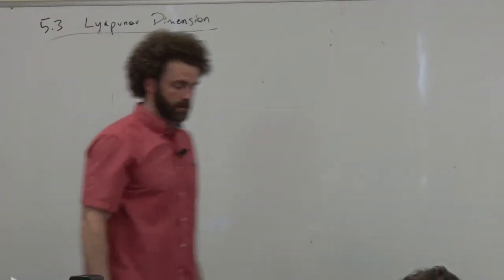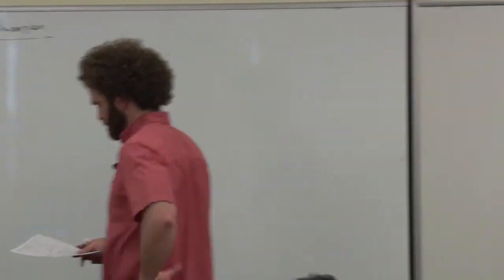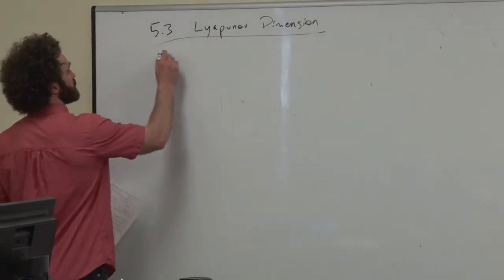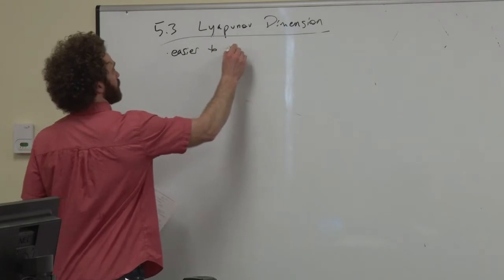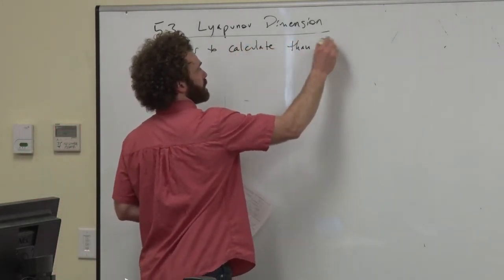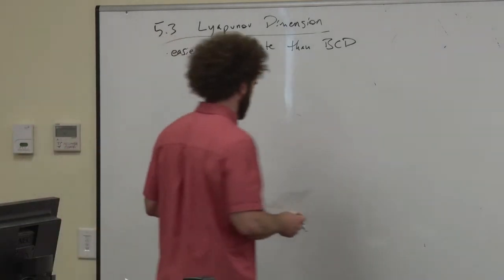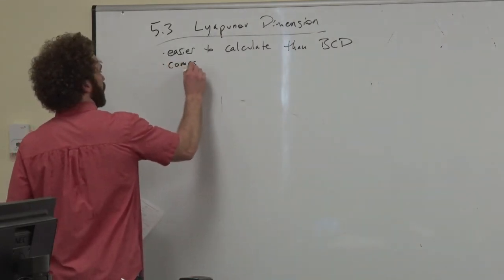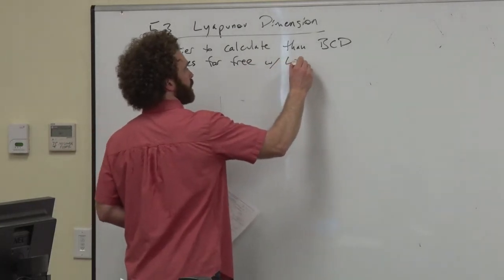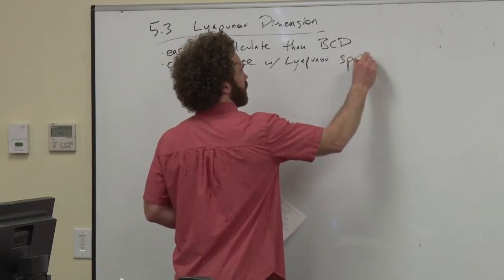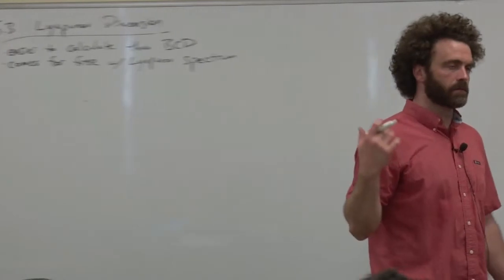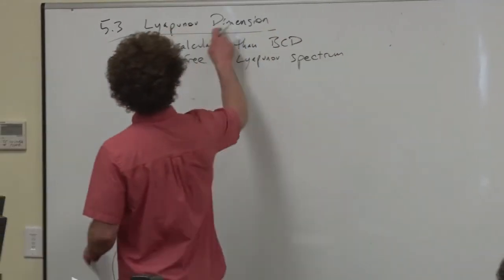Today we're going to talk about our final definition of the dimension of a set, based on Lyapunov exponents — the Lyapunov dimension. This is the one you'd imagine using for applications like weather prediction, where you have some idea of the local stretching and shrinking. We'll do an example working out what the box-counting dimension should look like for one of these stretching-and-shrinking sets, then see how the Lyapunov exponent definition gives the same answer. This should be easier to calculate than box-counting dimension, especially in higher dimensions, and it comes for free with the Lyapunov spectrum.